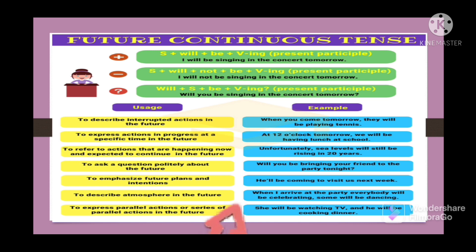Next, to describe atmosphere in the future: When I arrive at the party, everybody will be celebrating, some will be dancing. Next, to express parallel actions or series of parallel actions in the future: She will be watching TV and he will be cooking dinner. Same time it will be happening, she will be watching TV, at the same time he will be cooking dinner.